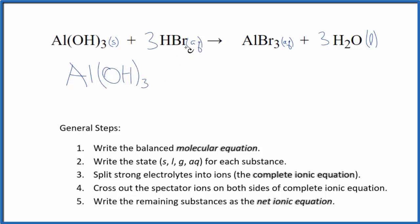But HBr, we said that was a strong acid. It's going to break apart. Hydrogen has a 1 plus ionic charge, bromide ion that's negative. 3 hydrogen ions and then 3 bromide ions. So these are the reactants in our complete ionic equation.